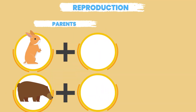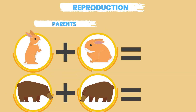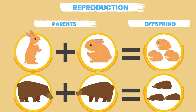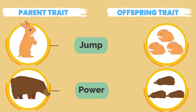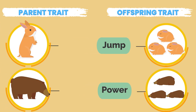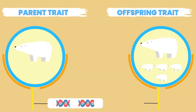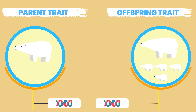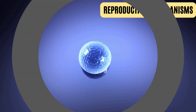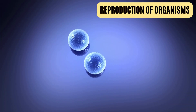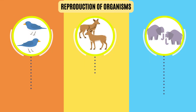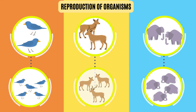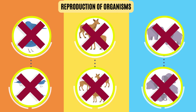Reproduction is a process in which an organism produces offspring. The offspring inherit the traits or the characteristics of a parent. During reproduction, the genetic material of the parent is passed on to the offspring. Reproduction is an important process for every organism, and without it, species would become extinct after one single generation.